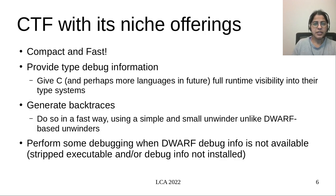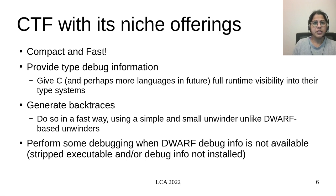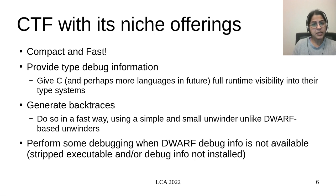So here comes CTF with its niche offerings. CTF is compact and fast. CTF can represent types for all C constructs and can be used to provide a C application full runtime visibility into its type system. CTF aims to provide a fast, compact way to generate backtraces, with support targeted to be present in the toolchain. CTF can help alleviate some of those issues with Dwarf by providing debugging means when Dwarf methods are not preferred or not possible.